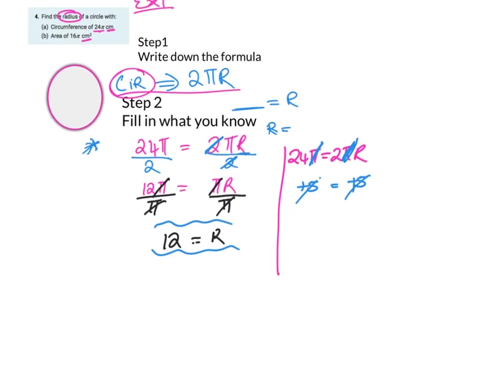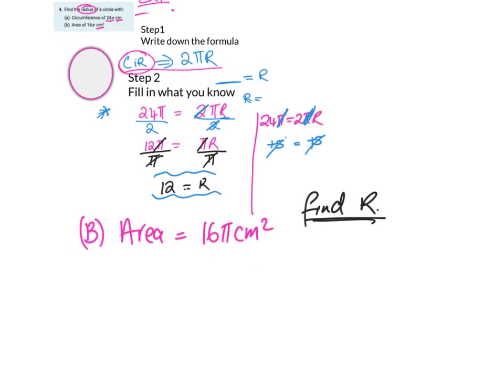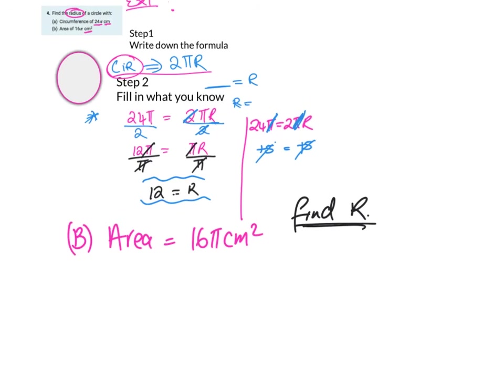Part b: the area is equal to 16π cm² and we're asked to find the radius. Step one, write down the formula: area of a circle is πr².